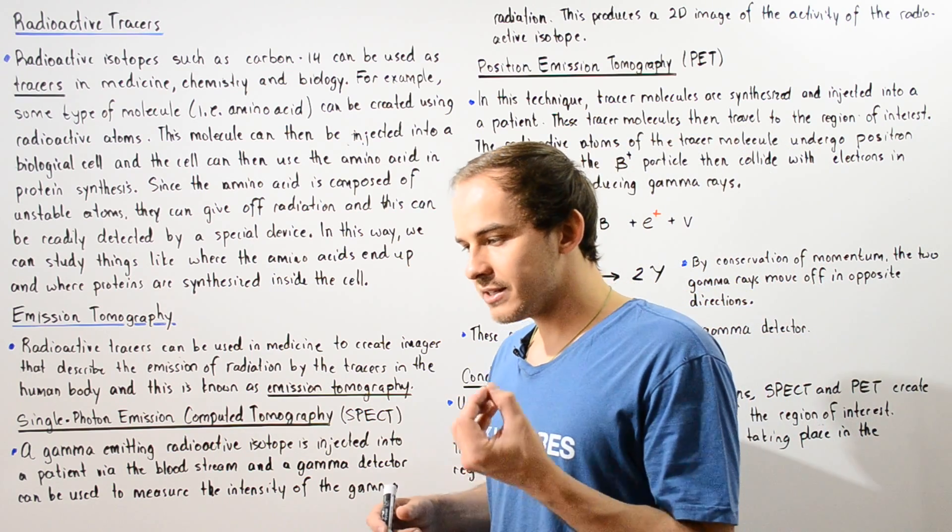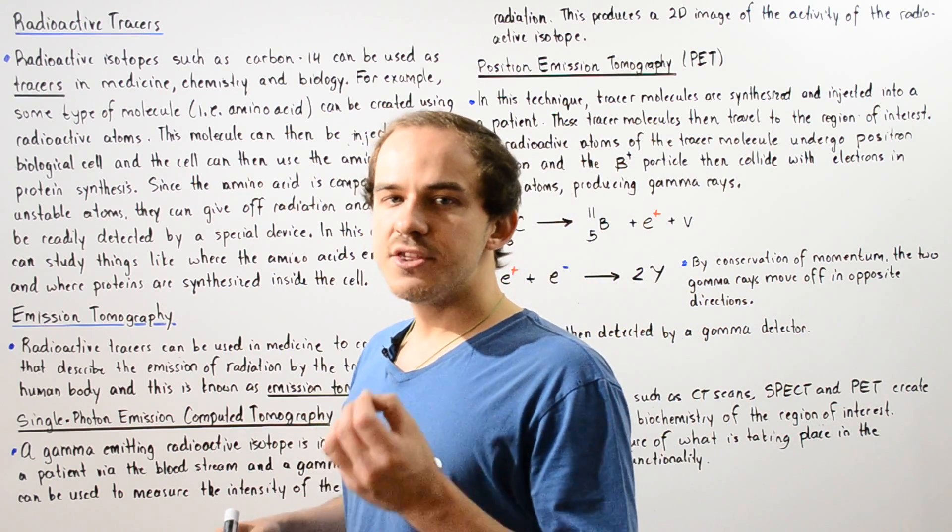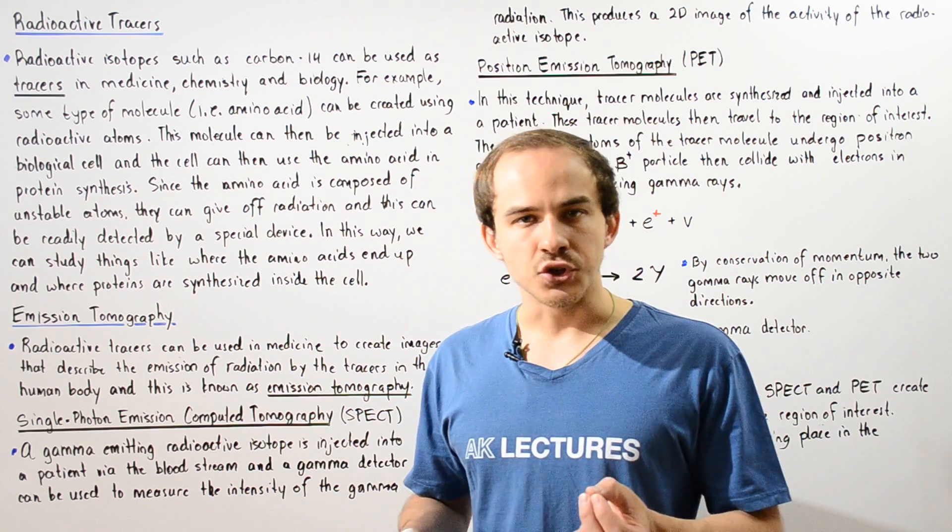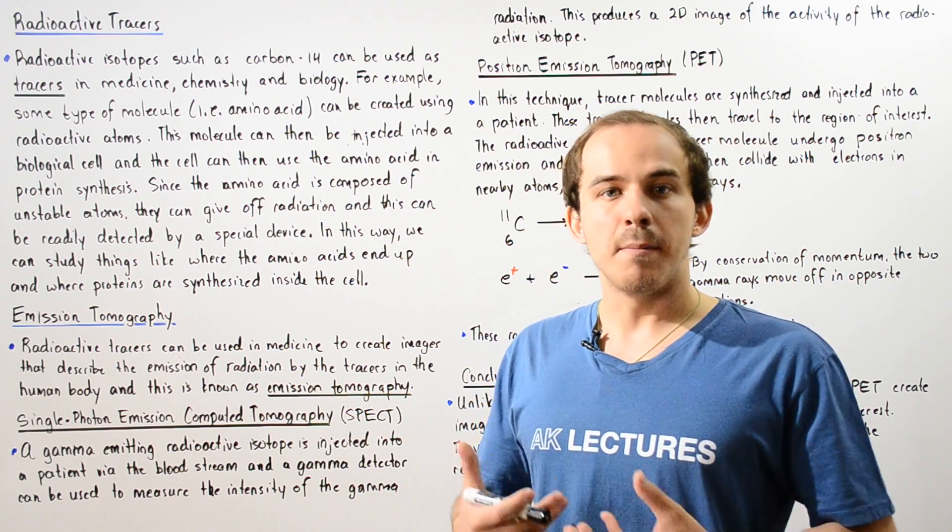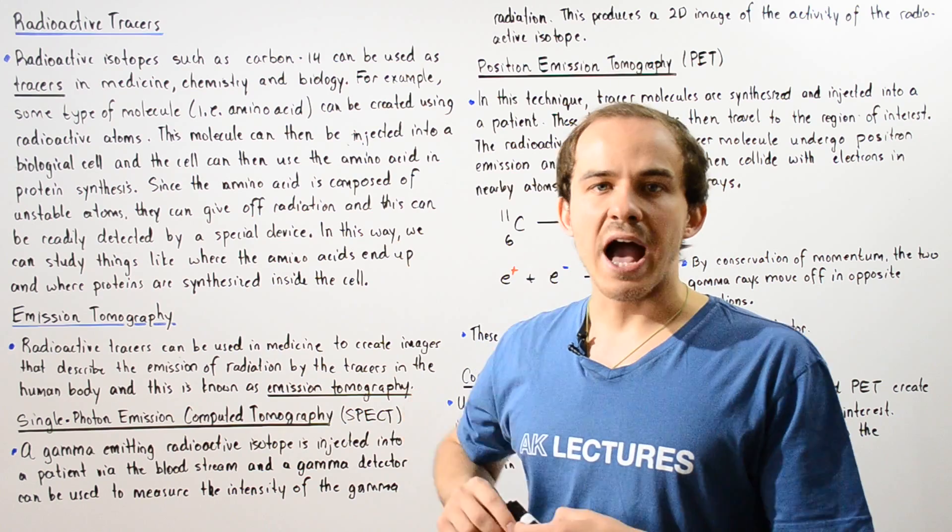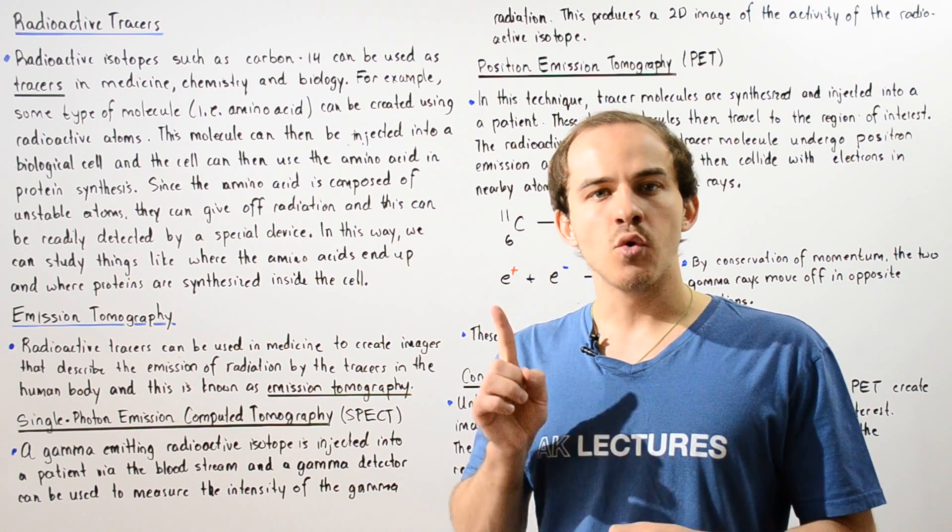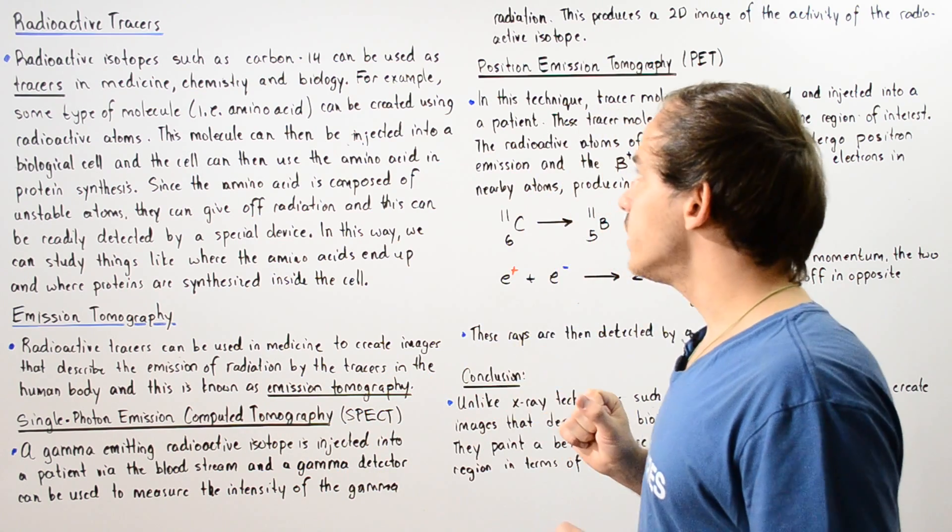A tracer is basically any type of object that can be readily monitored. For example, we can synthesize a tracer molecule by using radioactive isotopes, radioactive atoms.